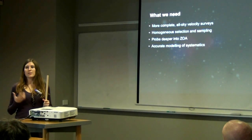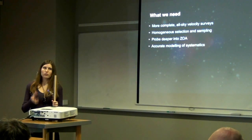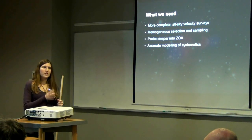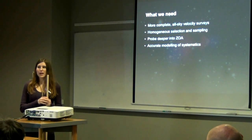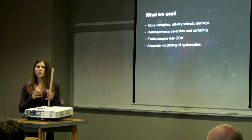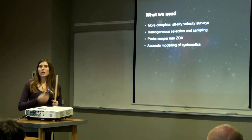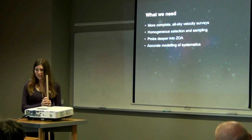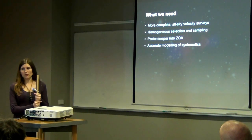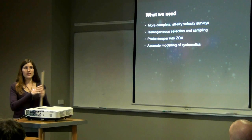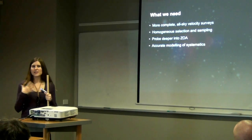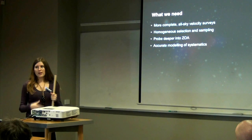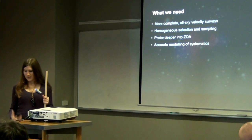What we need now is to have better peculiar velocity surveys. The Watkins paper used a collection of peculiar velocity surveys that were relatively small and had quite large errors. We can improve on that by having a much more complete and all-sky survey that is homogeneously sampled and selected. We also need to probe deeper into the zone of avoidance, where peculiar velocity surveys have had to avoid a large region of the sky where the Milky Way is. This can introduce systematics in bulk flow measurements, so we need better surveys and better modelling of these systematics.